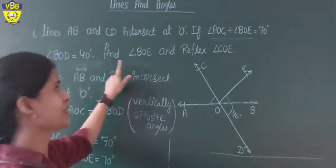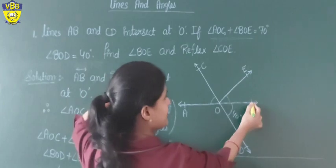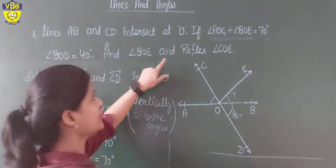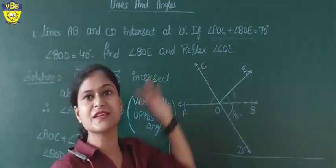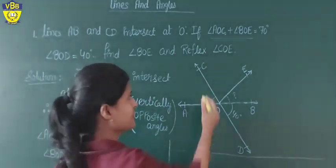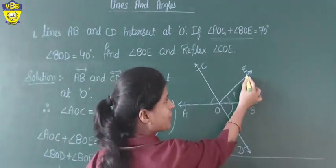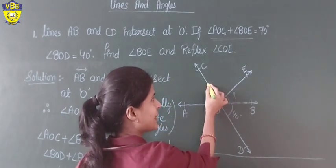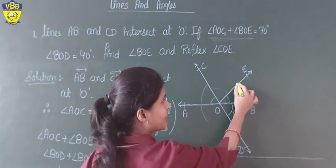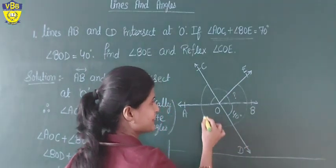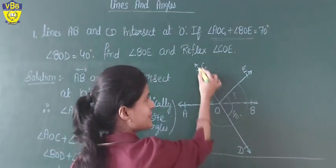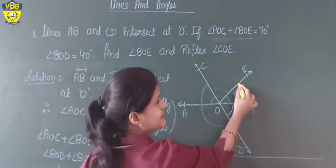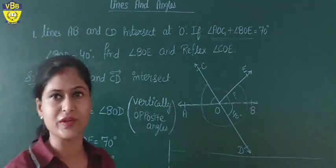We need to find out angle BOE — this separate angle — and the reflex of angle COE. Reflex COE means leaving the interior angle and calculating the value of the larger angle going the other way around.